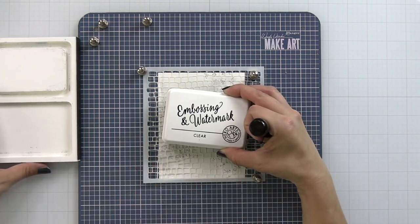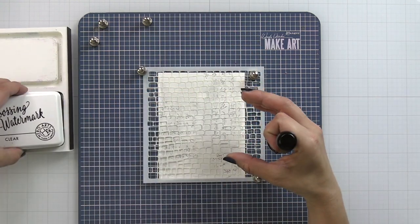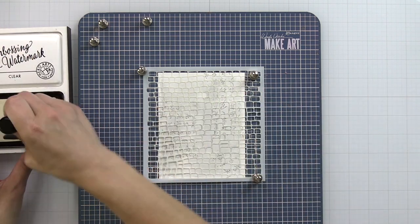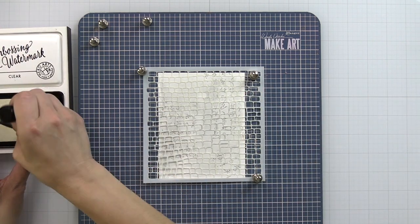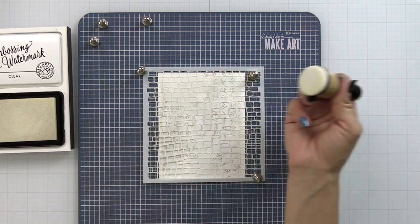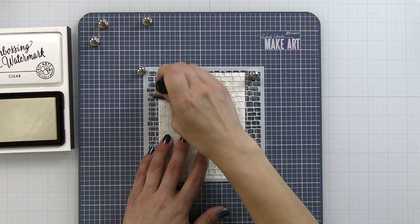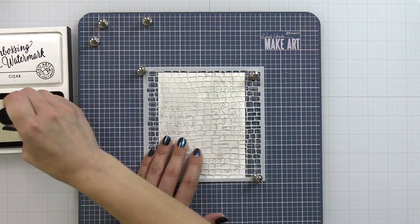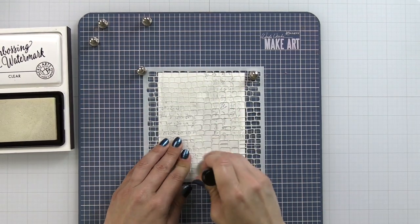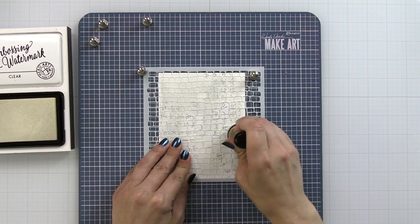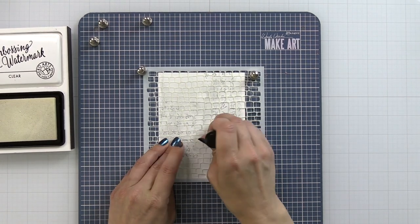I'm holding that down with magnets and I have the Hero Arts embossing and watermark ink. I have a sponge dauber here that I'm picking up that ink with and I'm going to dab and swipe this over just a couple areas of the stencil. I don't want to cover the whole background because I still have that subtle interest with the two background stamps.